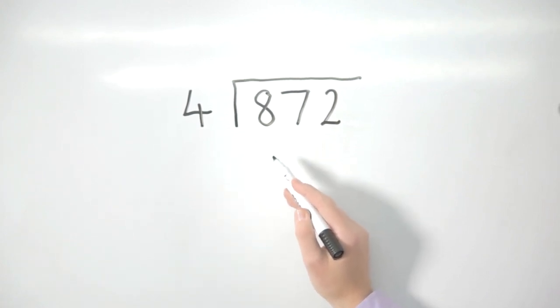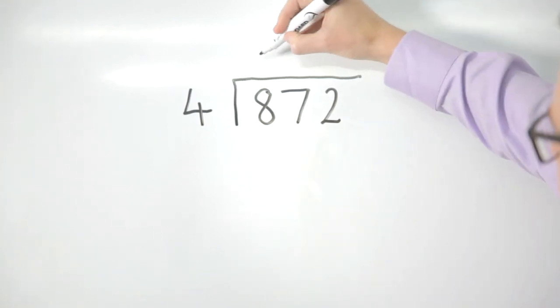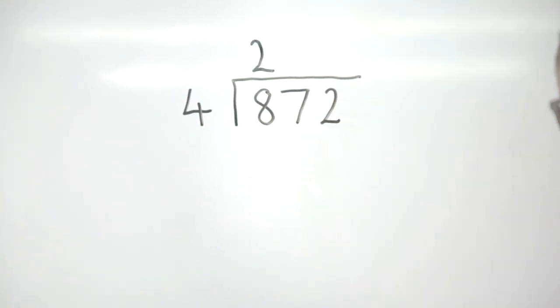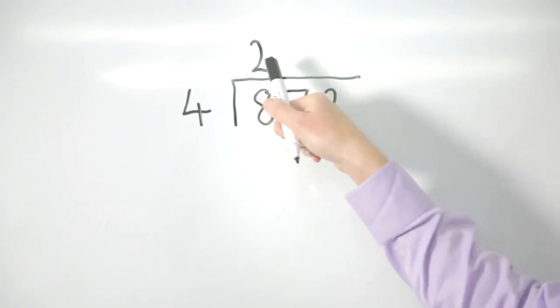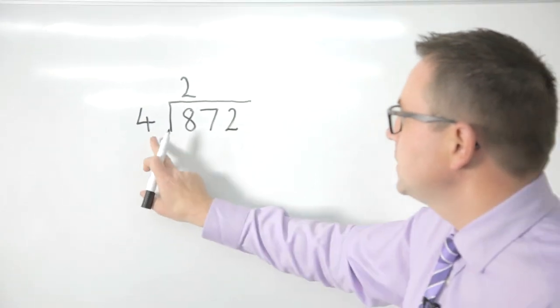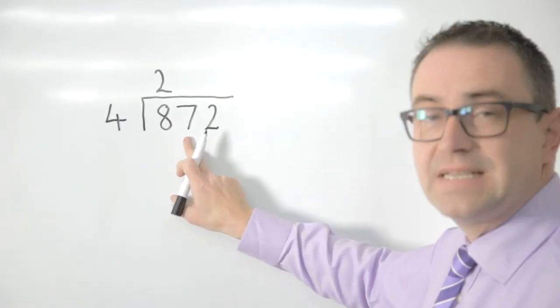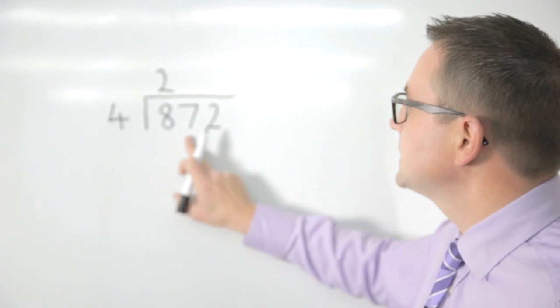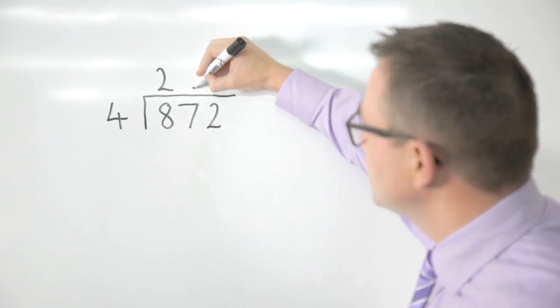So two fours obviously fit into eight, but what I'm really saying is that 200, because of where this is, fours fit into 800. I'm now looking at how many fours fit into seven, but really that's how many fours fit into 70. So I can see that one four does, but there is a remainder and I move that along.